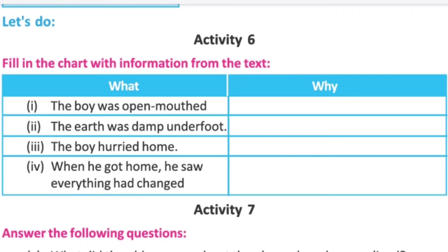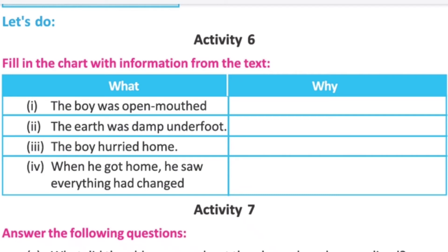Activity 6: Fill in the chart with information from the text. The boy was open-mouthed because he came to know that the old man once lived in a place where it hadn't rained for 10 years. The old man talked to him about a place where the clouds had not rained for 10 years.